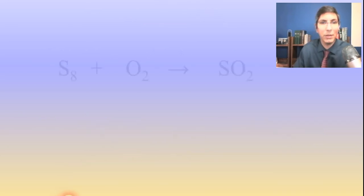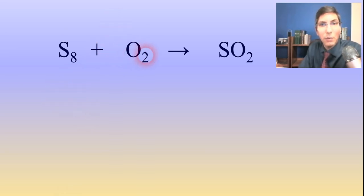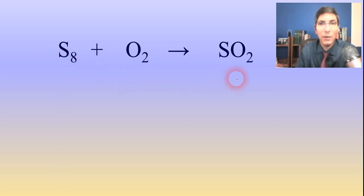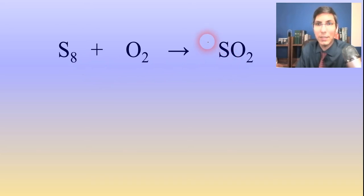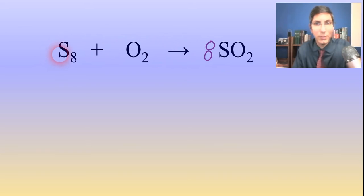Let's try another example — one with sulfur. Sometimes sulfur exists in the S8 form, and if we burn that in oxygen, we can make sulfur dioxide. So this looks like a synthesis reaction. The oxygens look already balanced — we have two here and two here — so let's focus on the sulfurs. How many sulfurs are on the left? There are eight: S8. And how many are on the right? Only one. So we're going to have to multiply the one on the right side by eight — one times eight gets us the same eight that we have over here. So the sulfurs are balanced.